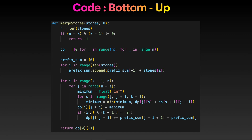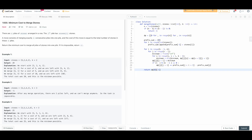Here is the code. The first step tests whether we can build the DP at all: if (n minus k) modulo (k minus one) is not zero, return negative one. Otherwise, we build the prefix sum array and fill out the DP table. Let's run the code.